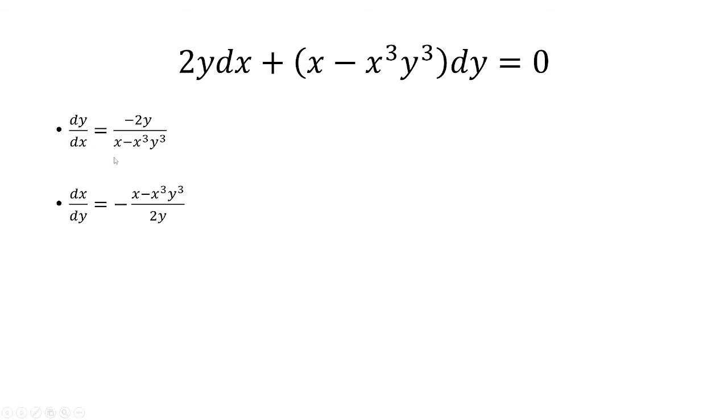The next step is to flip both sides, in other words, find the reciprocal. dy over dx is just dx over dy. And then for this one, I put the negative in front, and then I have x minus x cubed times y cubed as a numerator, and then 2y as a denominator.